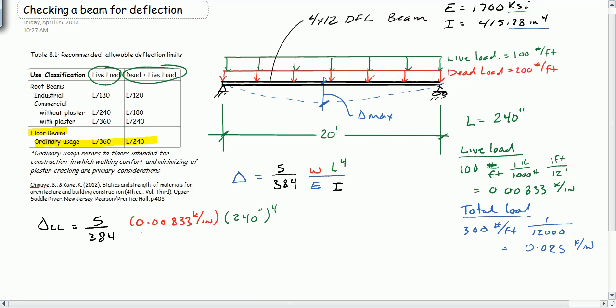Divide that by EI, 1700 KSI times 415.28 inches to the fourth. And when we do that, we get 0.5099 inches.